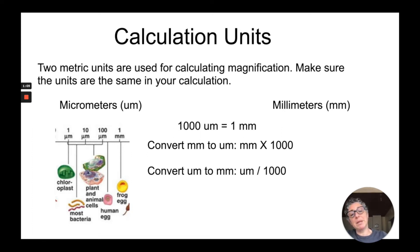If you want to convert from millimeters to micrometers you multiply by 1,000. If you want to convert from micrometers to millimeters you divide by 1,000. You just need to remember the 1,000 and the conversion for each one.